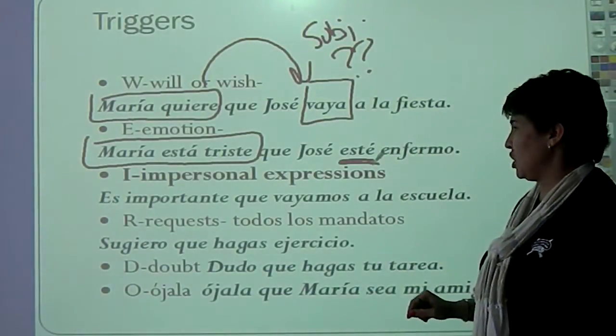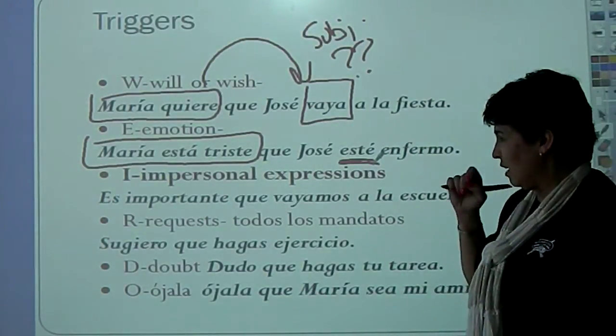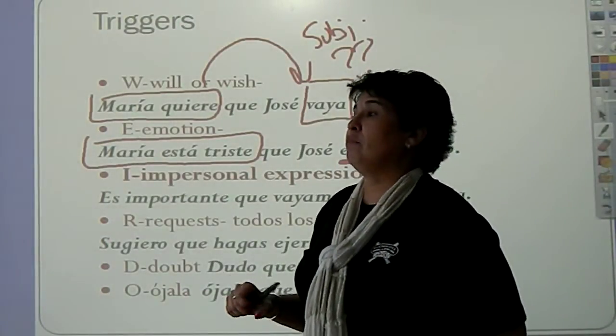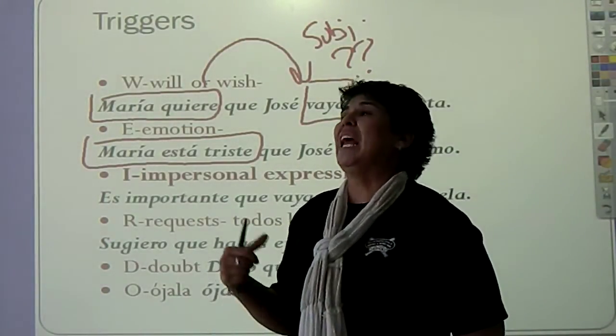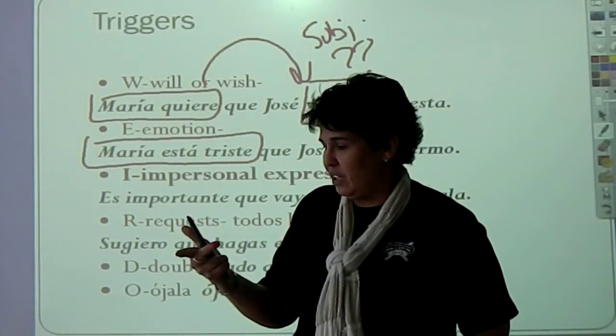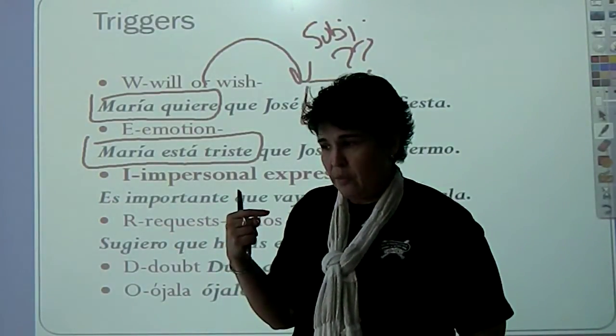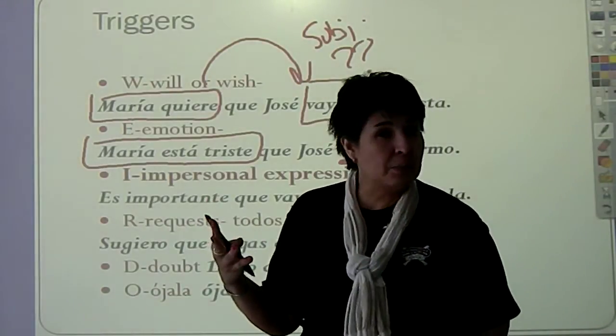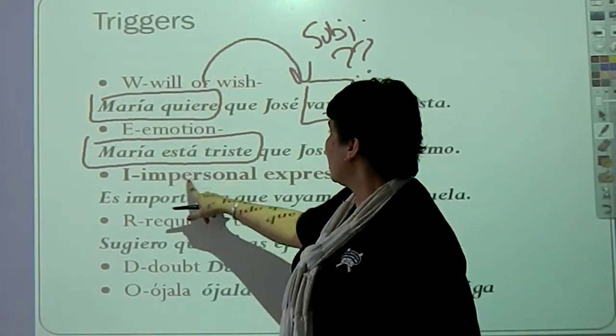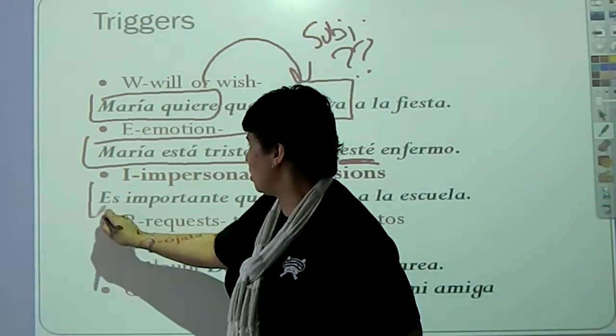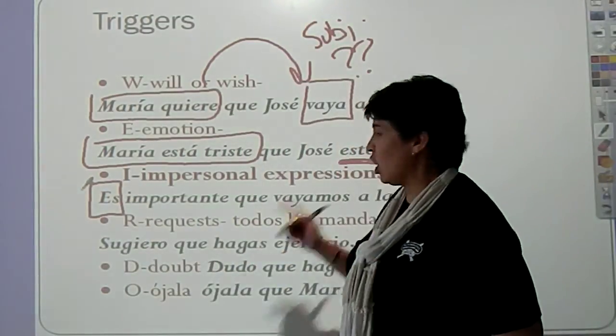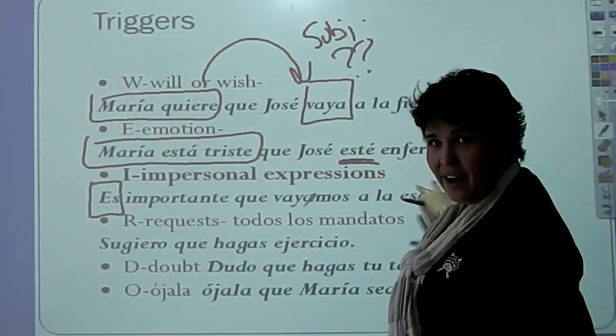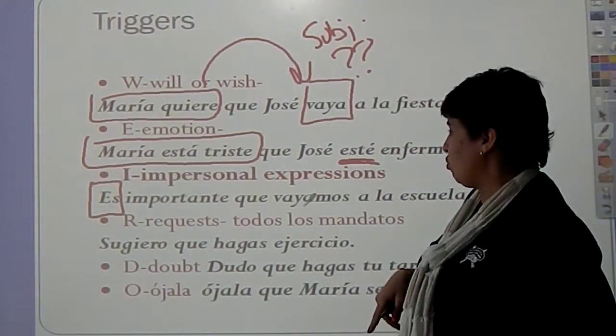And then this is the one that we are going to focus on, is the impersonal expressions. We'll talk about those in a second. But basically, impersonal means that they're just that. They're impersonal. It's important. It's ridiculous. It is certain. It is passable. It is. All those impersonal expressions that start with it is are going to require subjunctive. This is the only thing we're focusing on in Spanish 3. The rest of it we're going to do in Spanish 4.